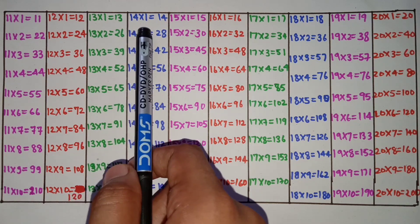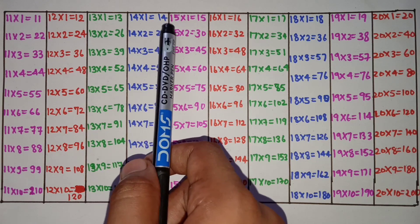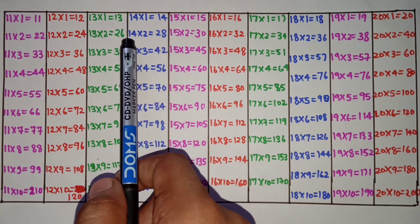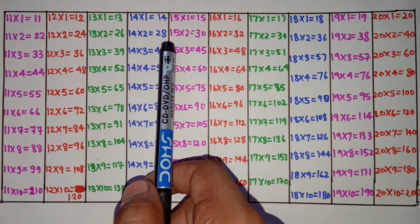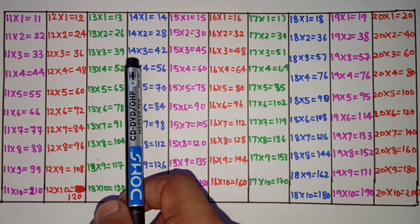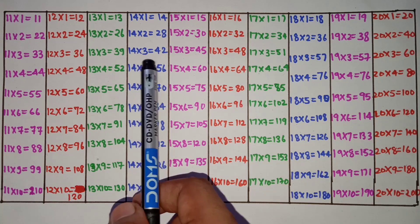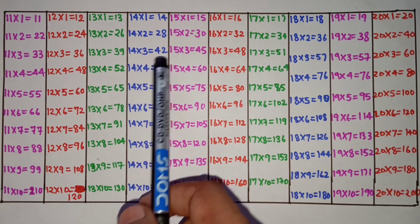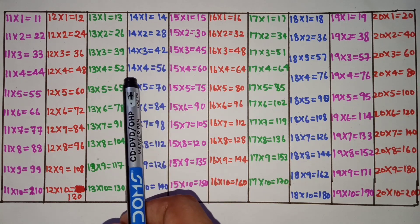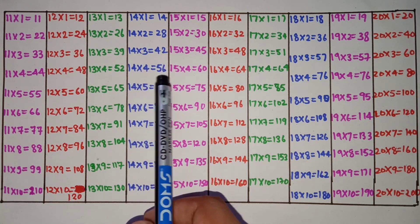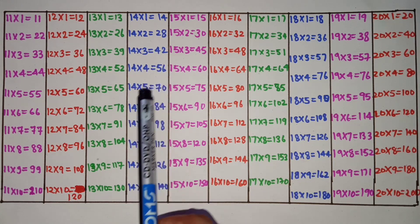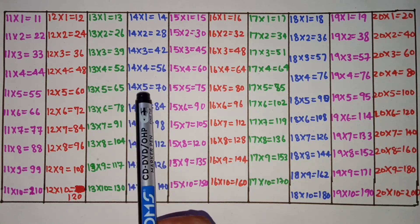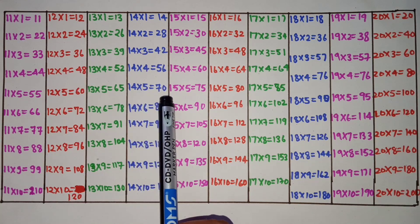14 1s are 40, 14 2s are 28, 14 3s are 42, 14 4s are 56, 14 5s are 70.